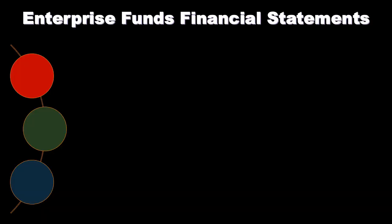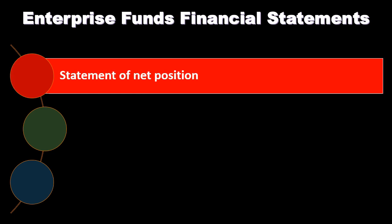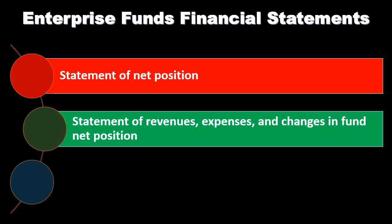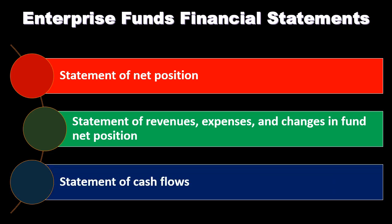Enterprise fund financial statements include the statement of net position, the statement of revenues, expenses, and changes in fund net position, and the statement of cash flows. The statement of net position is similar to a balance sheet; the term 'net position' is used in governmental accounting rather than a balance sheet, and indicates we are dealing with a proprietary fund as opposed to a governmental fund.